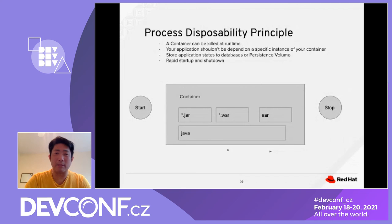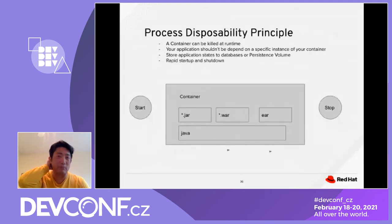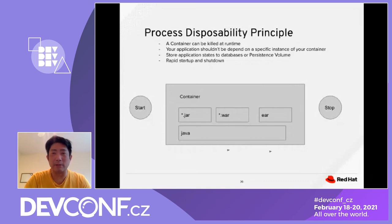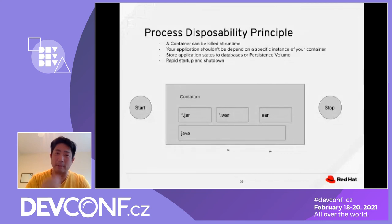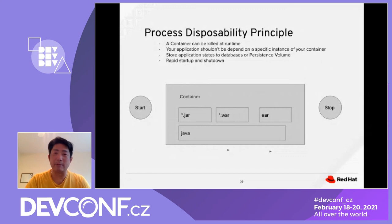Process Disposability Principle: a container can be killed at any time. When your container crashes it should be able to kill itself, and your application should not be dependent on a specific instance of that container. This brings up the discussion of stateful versus stateless applications. For applications that have state, you just need to store the application state into databases or PersistentVolumeClaims so that when your application restarts you still have a way to retrieve the data. This allows rapid startup or shutdown of the application.